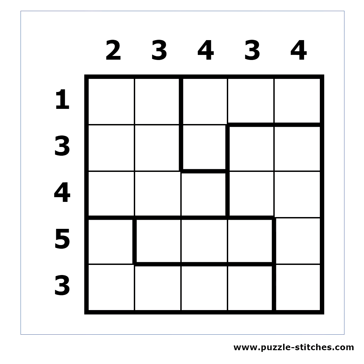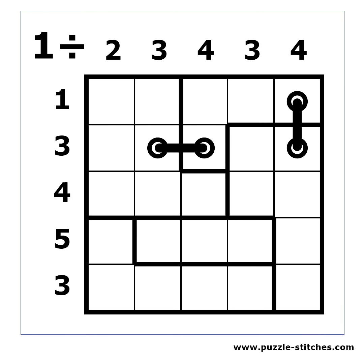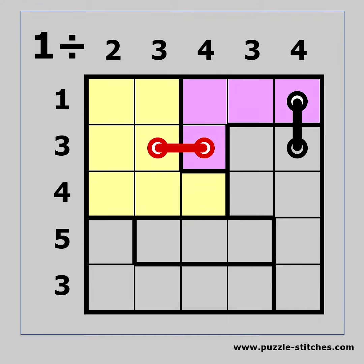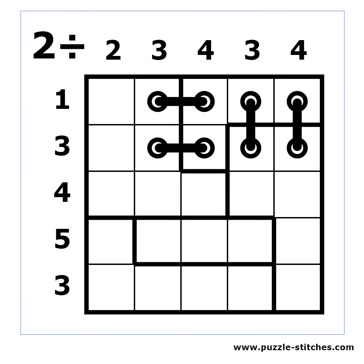You can connect neighbor blocks using stitches. A stitch connects adjacent cells horizontally or vertically. In the basic variant you have to use exactly one stitch to connect two blocks. In the two stitches variant you need to use two stitches for each connection, etc.